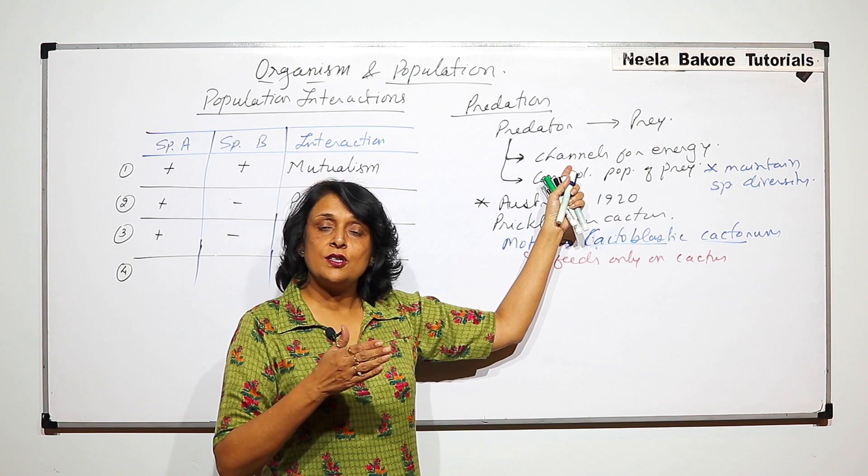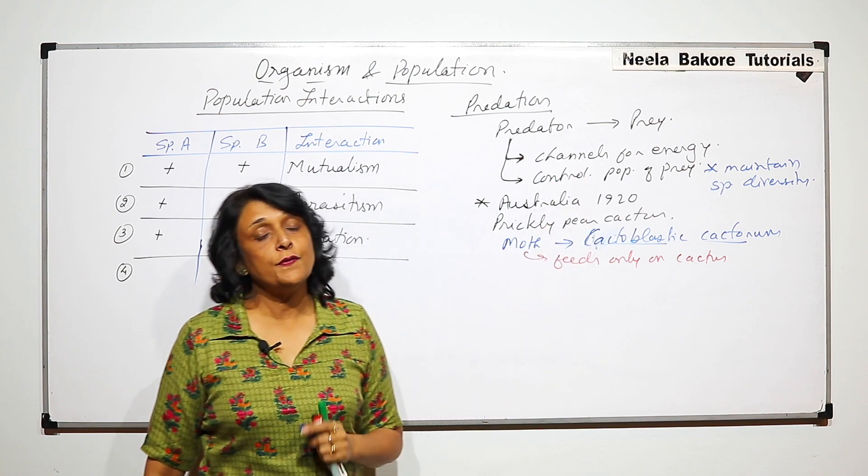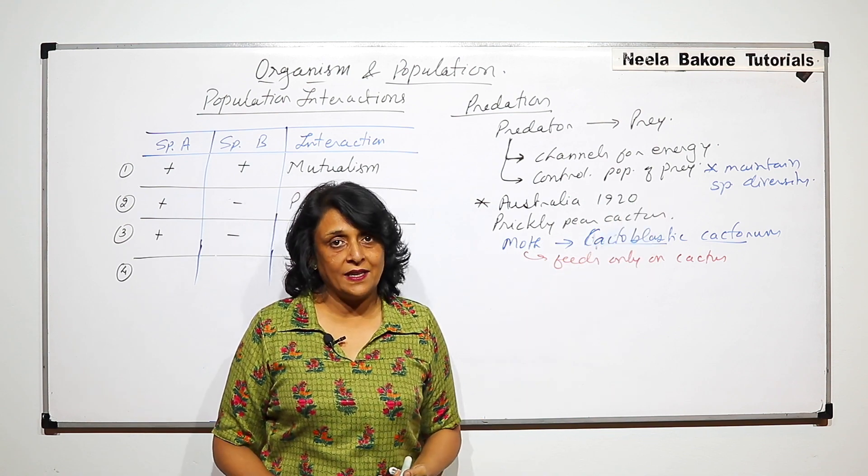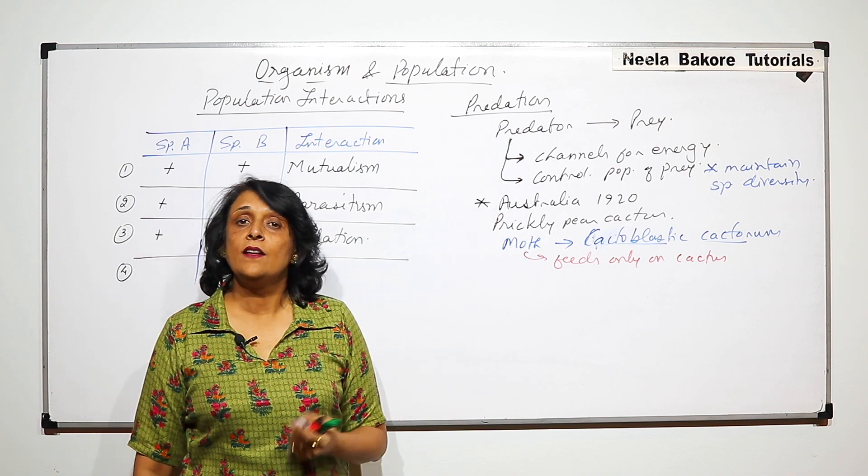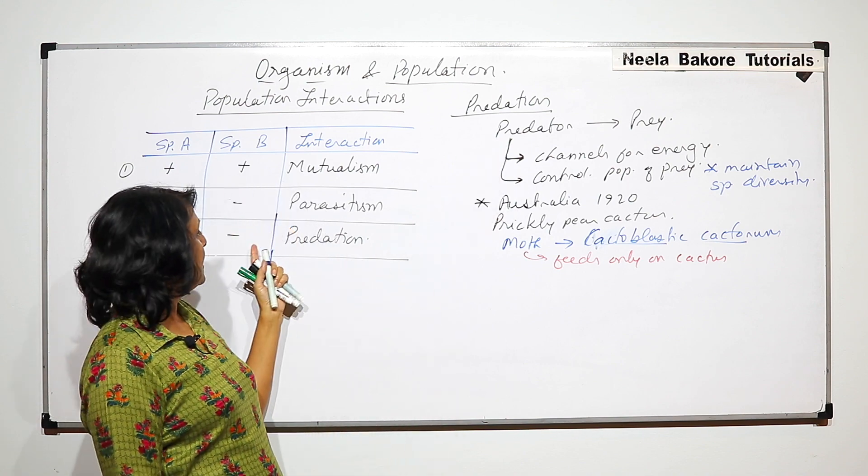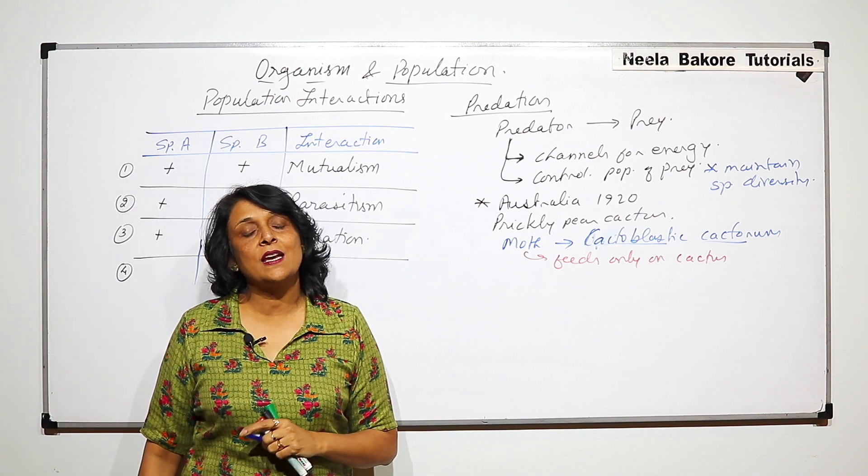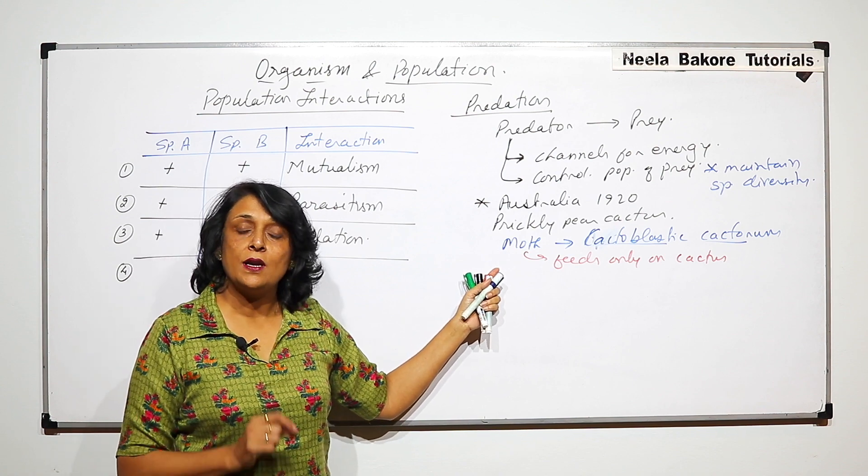They are channels because energy is transferred through them, and they control the population of the prey. The species which is harmed is the prey because it gets killed, and the predator is benefited because they are getting the food. So the relationship is one species getting benefited and other species getting harmed. This is an example of predation.